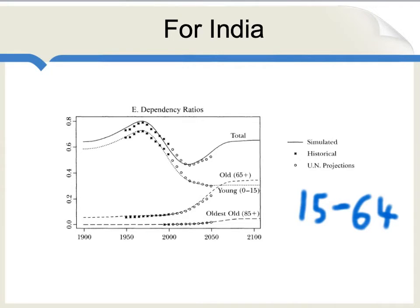The total dependency ratio reflects what is the ratio of the very young plus the old compared to individuals in the age group 15 to 64. Think of the individuals in the 15 to 64 group as the ones who might be working, and the others as not working. Overall, since about the 1950s, that ratio was falling in India, but a decade or two from now, that ratio will start to rise as there are more old people. India will find itself with a more serious economic problem because there will be a greater number of people to support relative to the number of people who are working.